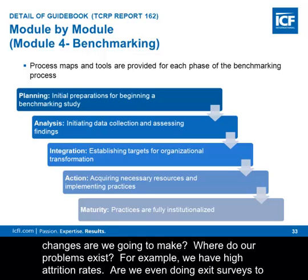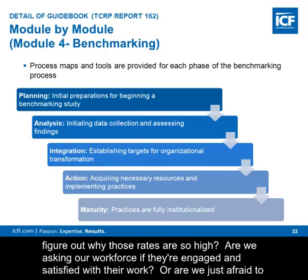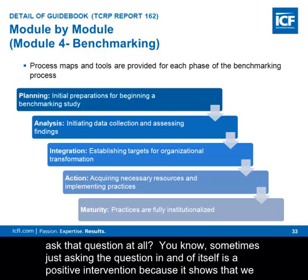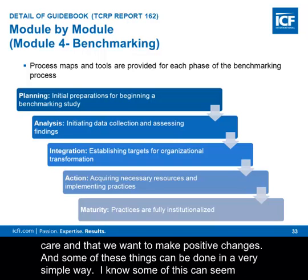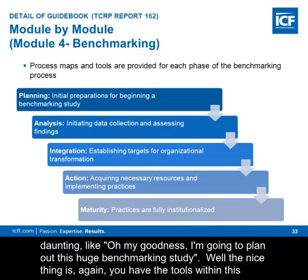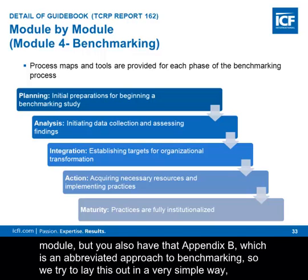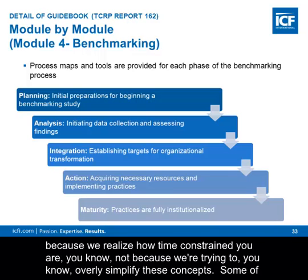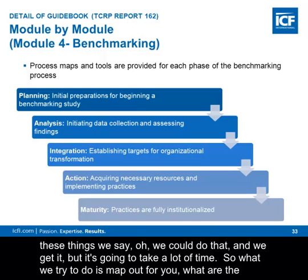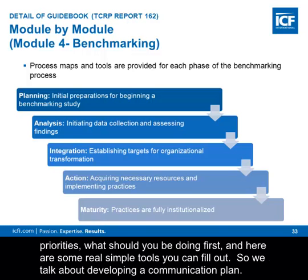Some of this is about doing an introspective analysis and figuring out what changes need to be made. If we have high attrition rates, are we even doing exit surveys to figure out why? Are we asking our workforce if they're engaged and satisfied? Sometimes just asking the question is a positive intervention because it shows you care and want to make positive changes. We realize how time-constrained you are, so we map out the priorities — what you should be doing first — with simple tools you can fill out.